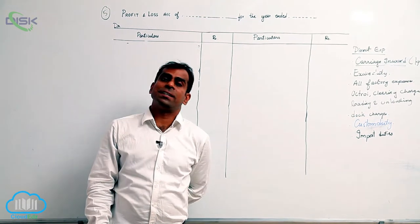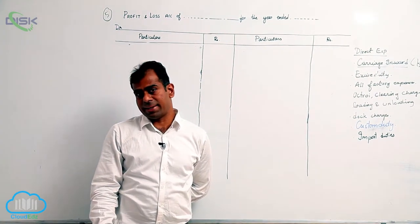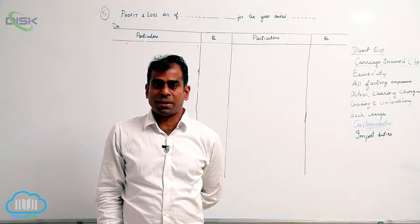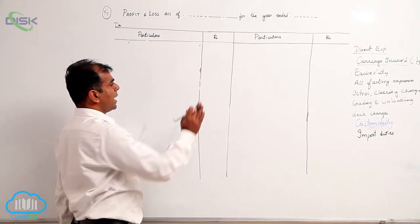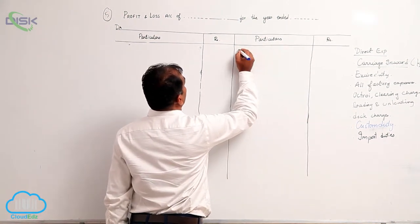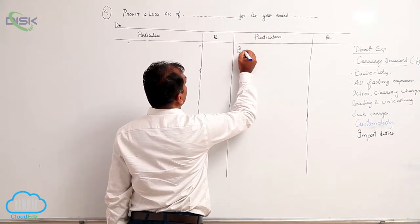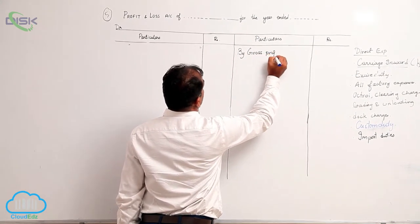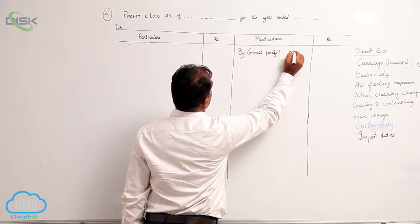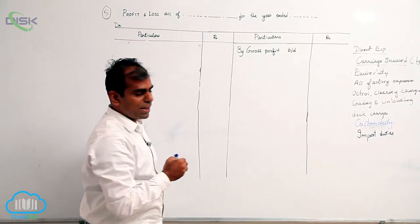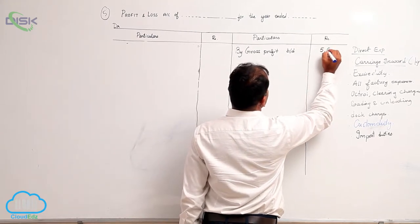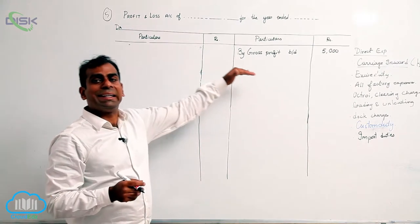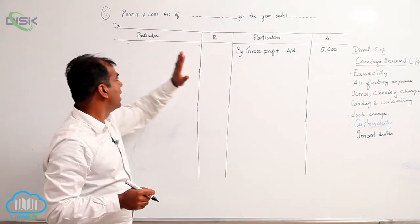All you have to identify is which is income and which is expense. Gross profit, as you all know, is written on the credit side of the P&L account as 'gross profit brought down,' the amount being five thousand. Expenses go on the debit side and incomes on the credit side to find net profit or loss.